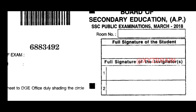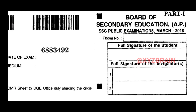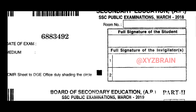Let's check the room number. In this box, you can choose the room number. You can also fill in the full signature of the student. You can fill in the full signature of the invigilator as well as the student sign.